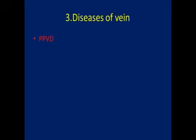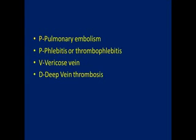The third mnemonic is for diseases of the vein. The mnemonic is PPVD: P for pulmonary embolism, P for phlebitis or thrombophlebitis, V for varicose vein, and D for deep vein thrombosis.